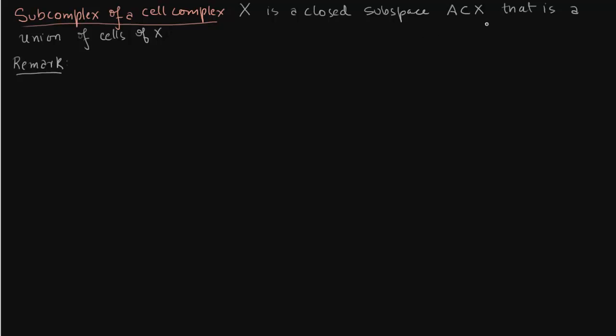The first remark is that A is closed and here I am going to talk about the characteristic map of each cell in A.